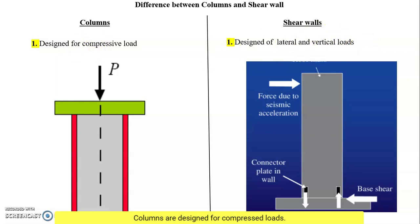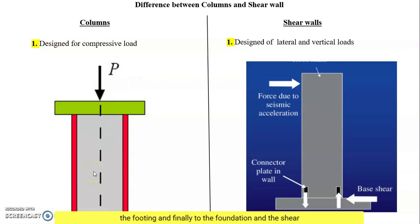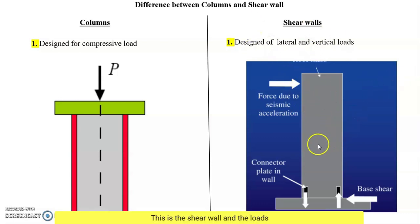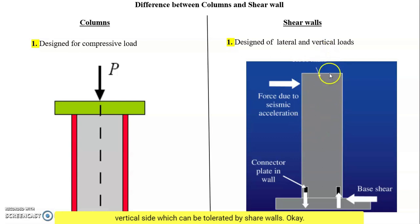Columns are designed for compressive loads. For example, a compressive load is applied on the column and the column transfers the load to the footing and finally to the foundation. Shear walls are designed for lateral and vertical load resisting — the shear wall resists lateral and vertical loads coming from earthquake and wind forces.